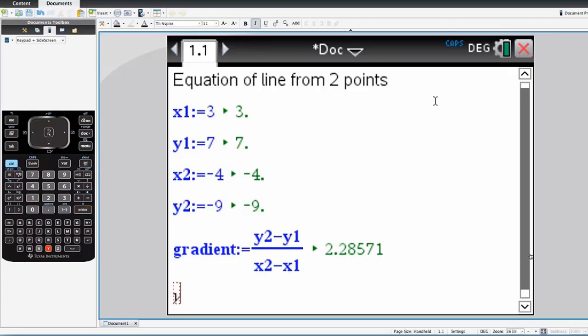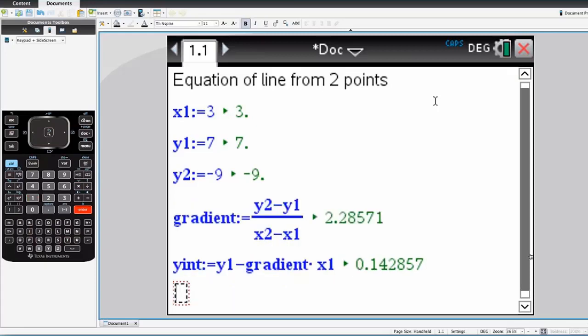That's what we do. And now we want a y-intercept, which we can do by just saying y1 minus the gradient times x1. And those go bold because they're predefined. So that's the basics of it.